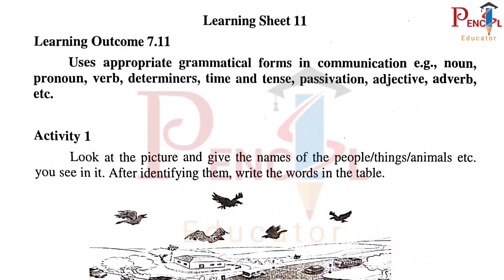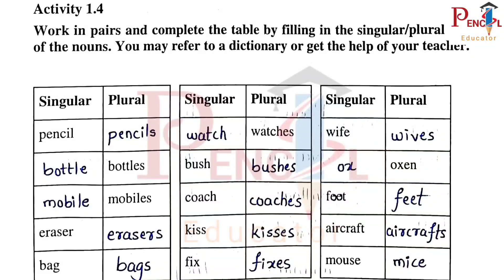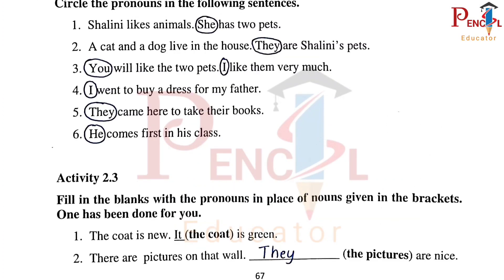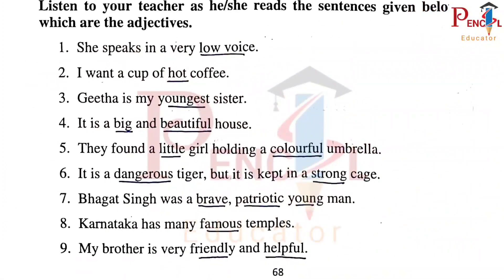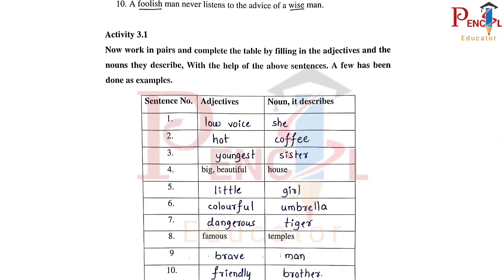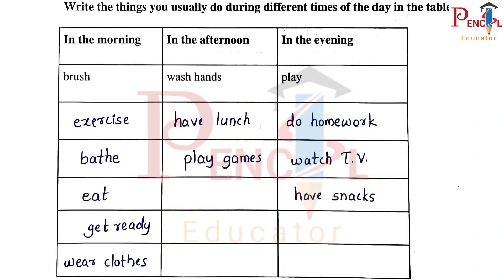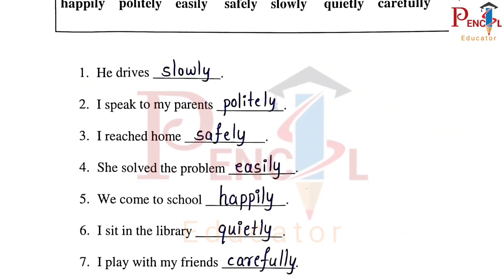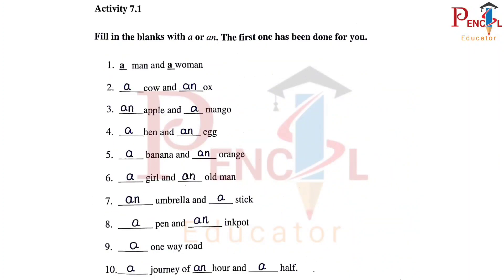Learning Sheet 11. Activity 1.2 — Nouns from the Passage. Activity 1.4 — Singular, Plural. Nouns, Pronouns, Activity 2.2 and 2.3 — Pronouns are filled in the blanks. Activity 3.1 — Underlined words or adjectives, Adjectives and Noun it describes. Activity 3.3 — Actions are listed in the respective columns. Activity 4.1: Dancing, Dreaming, Playing, Reading. Adverbs: Slowly, Politely, Safely, Easily, Happily, Quietly, Carefully. Parts of speech: Nouns, Pronouns, Adjectives, Verbs, Adverbs.